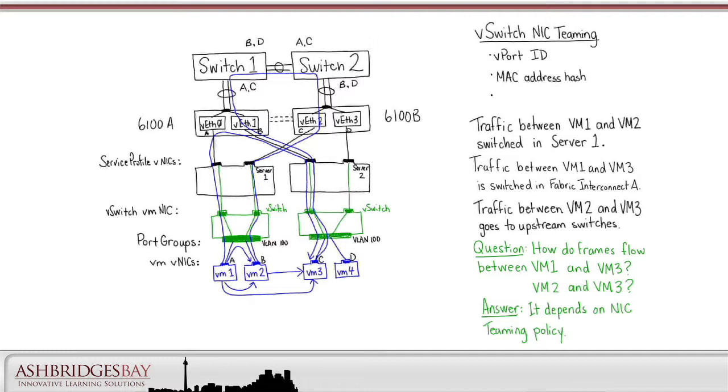What happens if we use IP hash NIC teaming? Some flows from VM1 will go upstream via Fabric Interconnect A and others via Fabric Interconnect B. MAC address A will flap between switch ports. That's never a good thing. IP hash NIC teaming is a bad idea for UCS B-series servers.